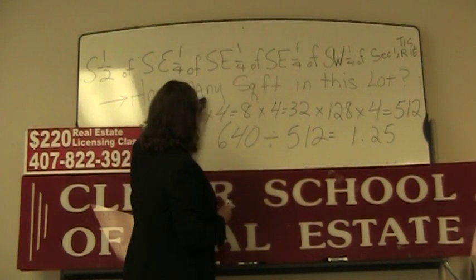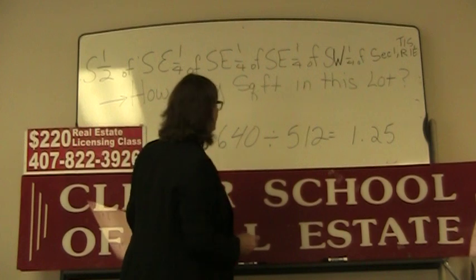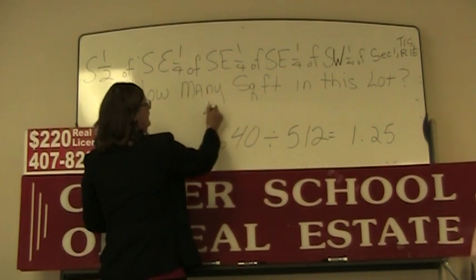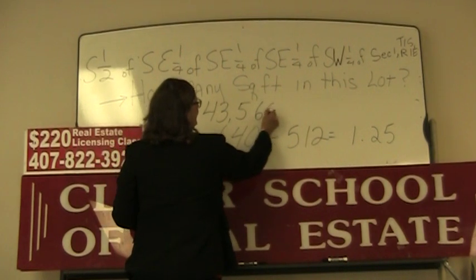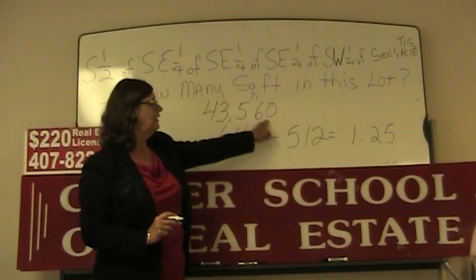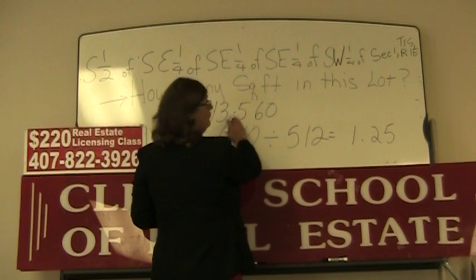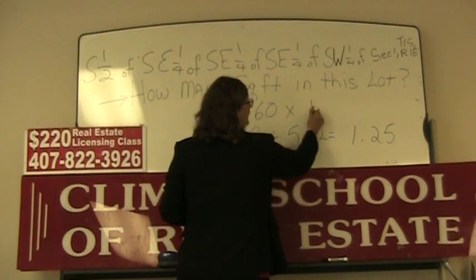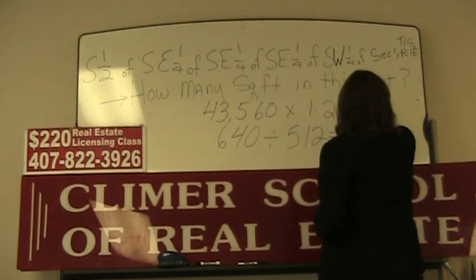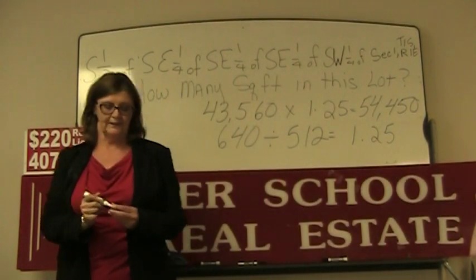The question is, how many square feet are in this lot? Do you remember how many square feet there are in one acre? That's a number you have to remember — how many square feet there are in an acre is 43,560. Now one of the other instructors said as a memory aid, they teach their students: 4 old ladies going 35 miles an hour in a 60 mile an hour zone. If you take those square feet in one acre times how many acres there are, do the math on your calculator, and it turns out to be 54,450 square feet in this lot described by the legal description.